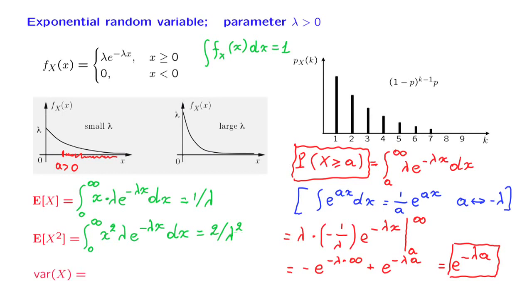And the expected value of x squared is this term. The expected value of x is this term. When we square it, it becomes similar to this term. But we have here a 2, there we have a 1, and so we're left with just 1 over lambda squared. And this is the variance of the exponential random variable.